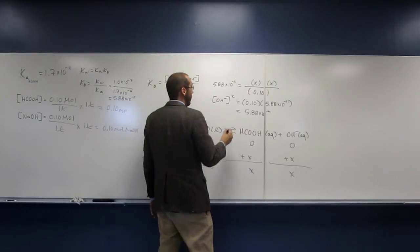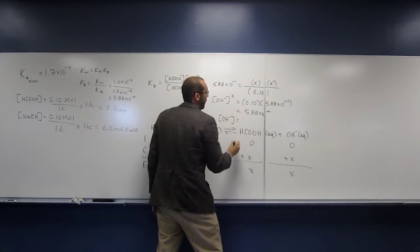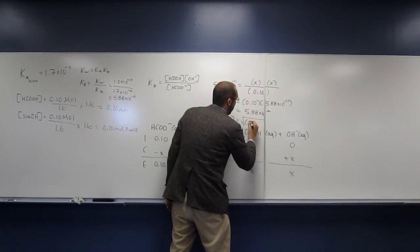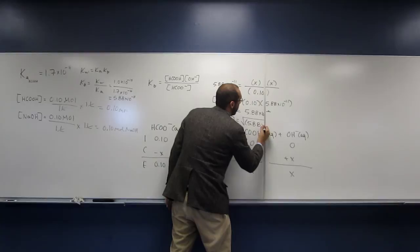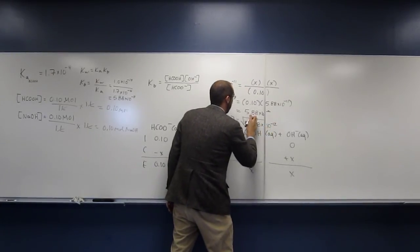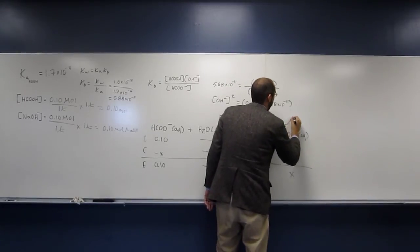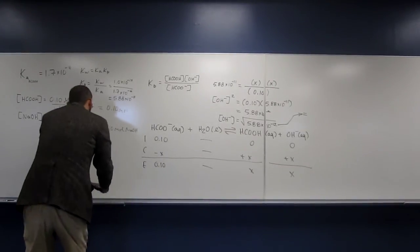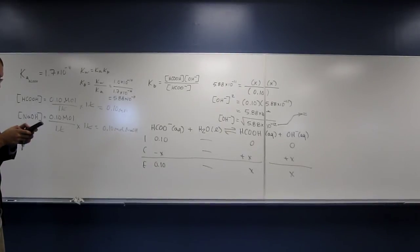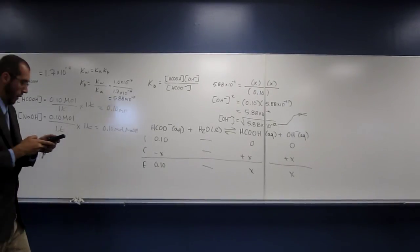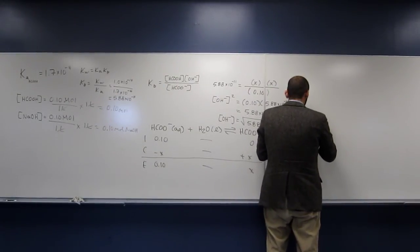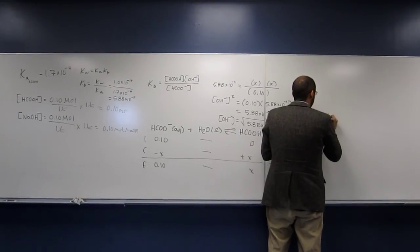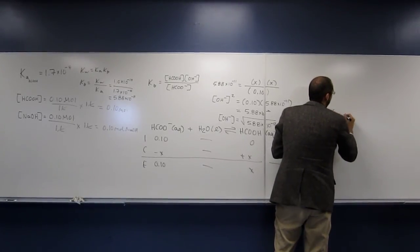So what's the concentration of the hydroxide ion? Well, it's going to be the square root of 5.88 times 10 to the negative 12th. So when I get that, I get 2.43 times 10 to the negative 6th molar OH minus.